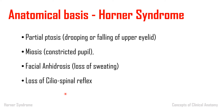Loss of ciliospinal reflex: the pathway for this reflex uses the same sympathetic route. A painful stimulus over the cervical region — for example, pinching the right side of the neck — leads to ipsilateral pupillary dilatation. When there is painful stimulation, the sympathetic becomes overactive, causing mydriasis as a protective reflex. The afferent cutaneous input travels to the ganglion, activates the sympathetic pathway, and produces mydriasis. When the sympathetic pathway is damaged, the ciliospinal reflex is lost.